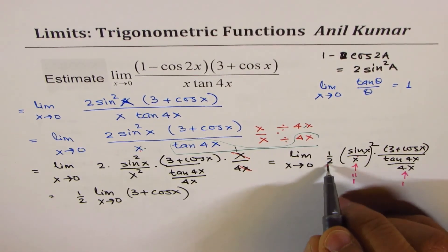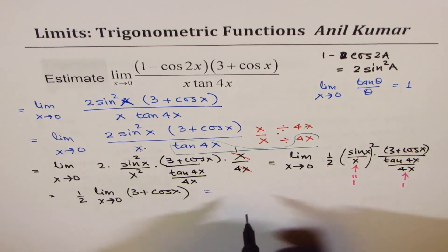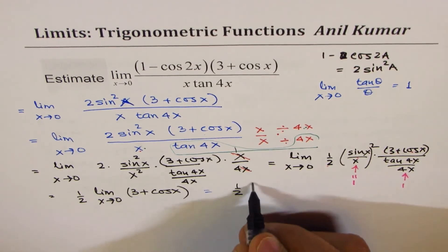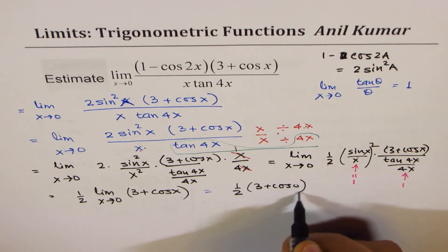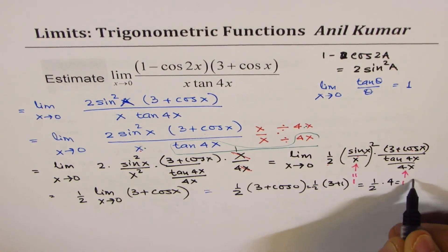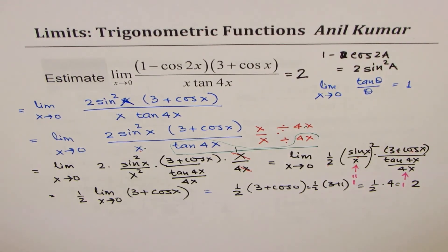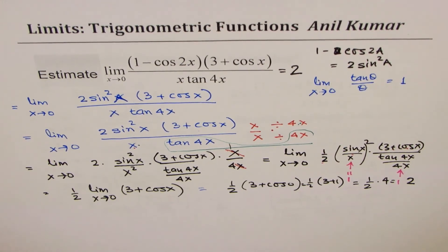Both limits equal 1, so we're left with one-half times 3 plus cos x. Substituting 0, we get 3 plus cos 0, which is 1. So one-half of 3 plus 1, which is 4, giving us one-half of 4, which is 2. The limit of this function is 2. When you have trigonometric functions, you may have to multiply and divide by a few terms and rearrange. I hope the steps are clear. Feel free to suggest, and you can like and share my videos. Thank you and all the best.